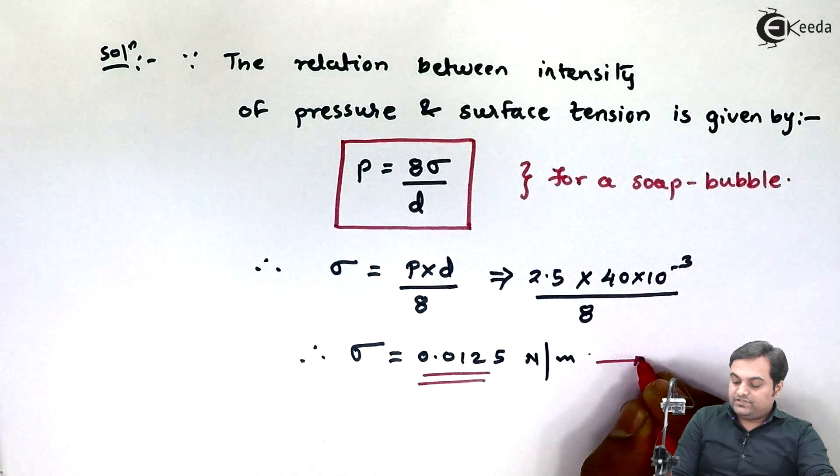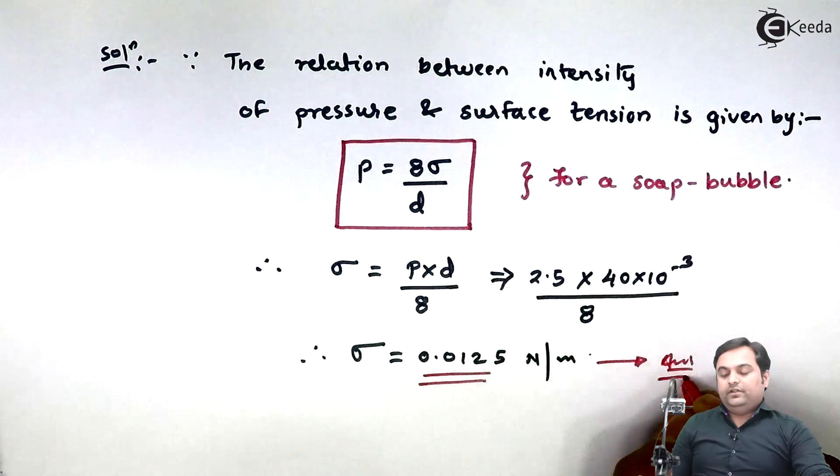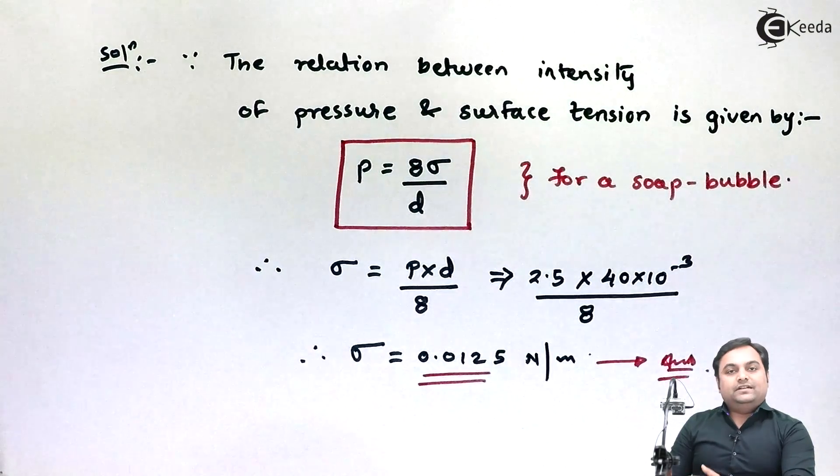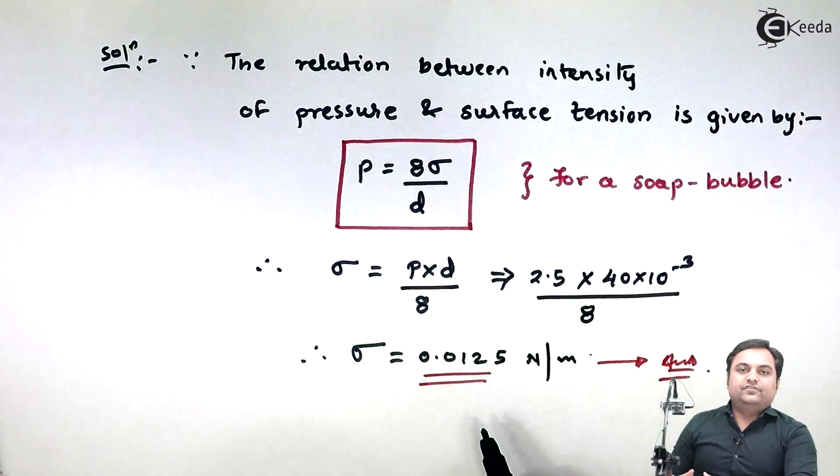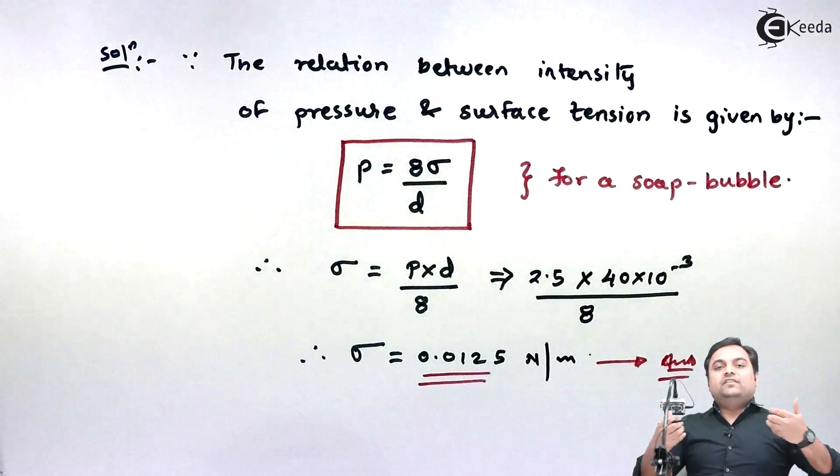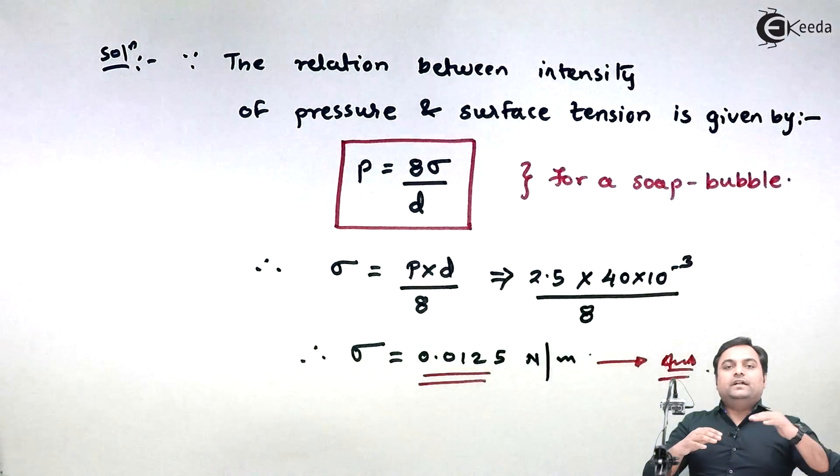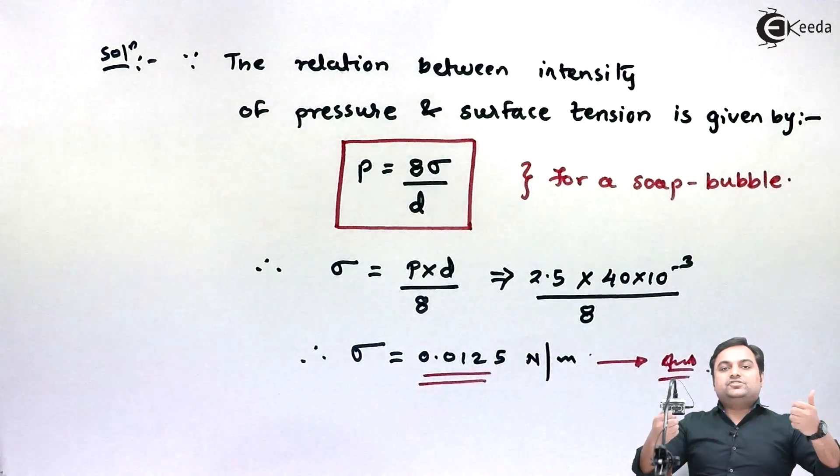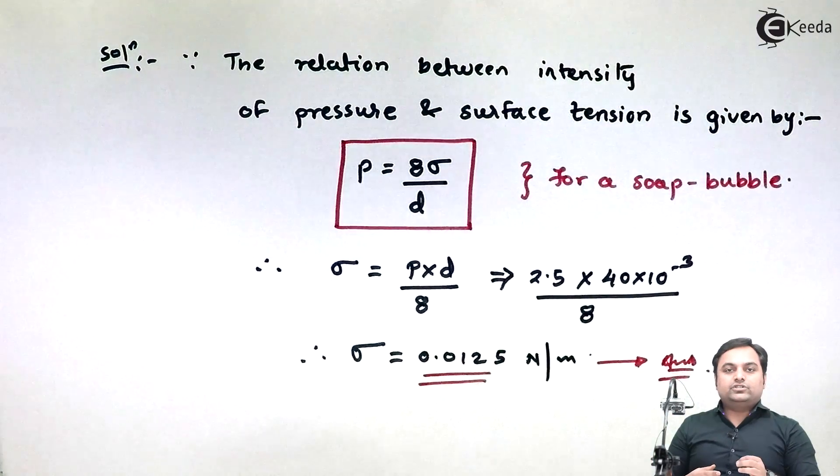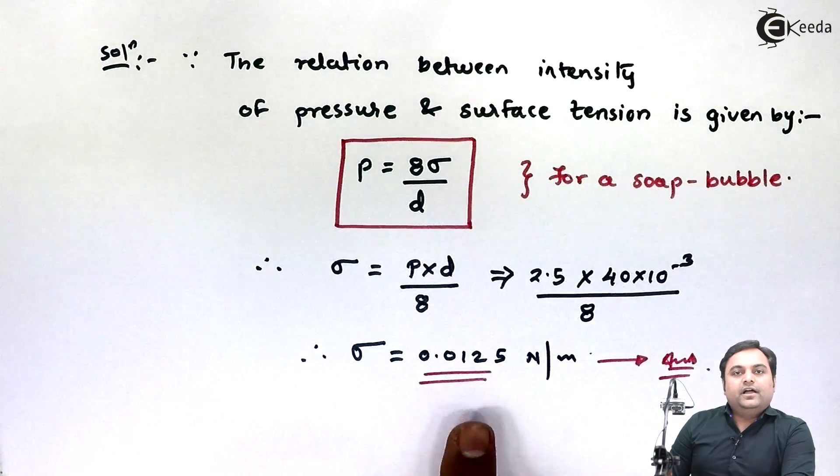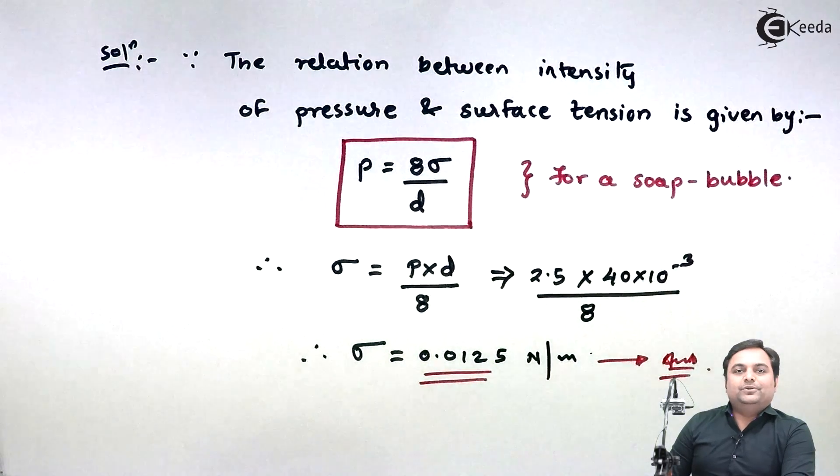So this is the answer. It means the soap bubble which we have is having a surface tension, that is a tensile force acting over that soap bubble which will try to keep that soap bubble in a stretched condition. The answer is 0.0125 Newton per meter. With this we complete the problem.